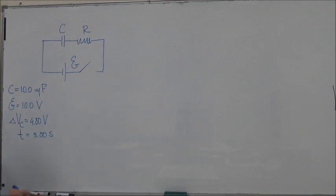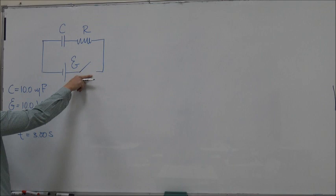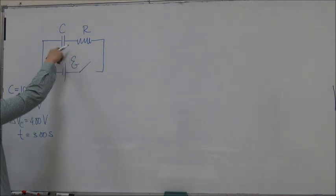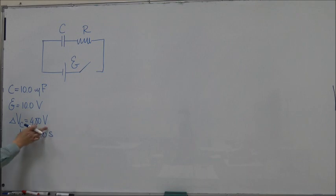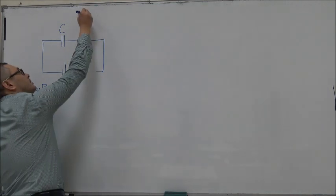It says in the question that if we close the switch at time t = 0, we start charging the capacitor through the resistor R and the voltage on the capacitor reaches 40 volts in 3 seconds. If this is the case, what is the value of the resistance that we use?